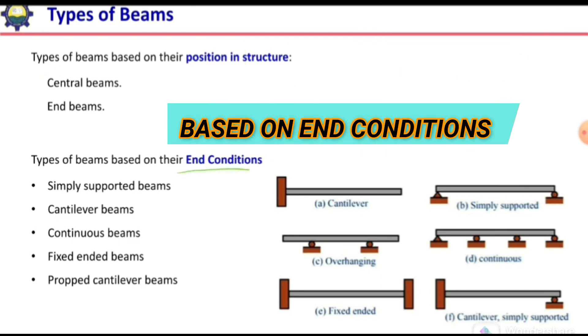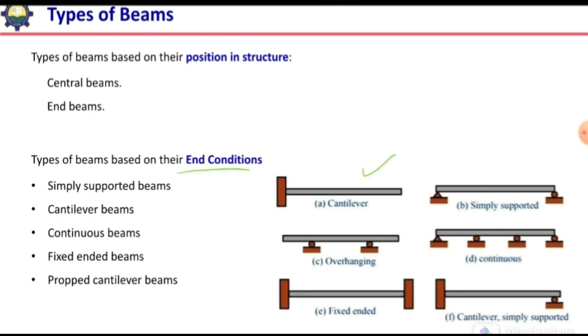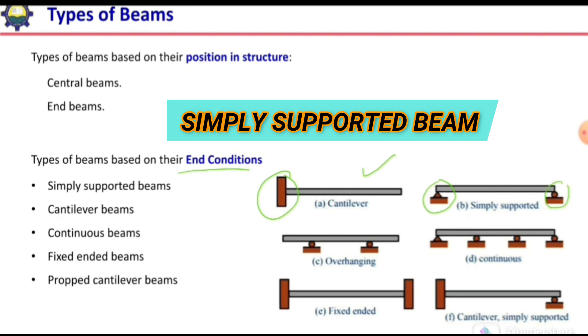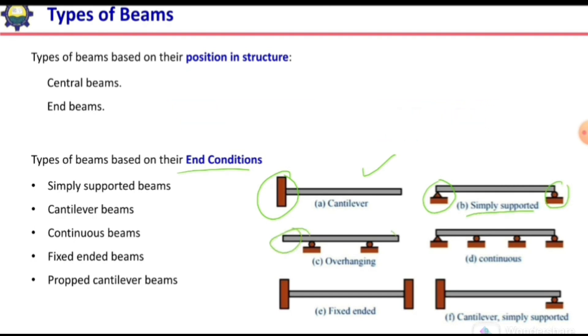We are familiar from the structural analysis: we have cantilever beam if we have support on one side only and the support is fixed standard. Then it will be termed as the cantilever beam. If we have pin support or roller support on one side and roller support on the other side, then it will be termed as simply supported beam. If we have overhangs on one or two sides of the supports, then it will be termed as overhanging beam.